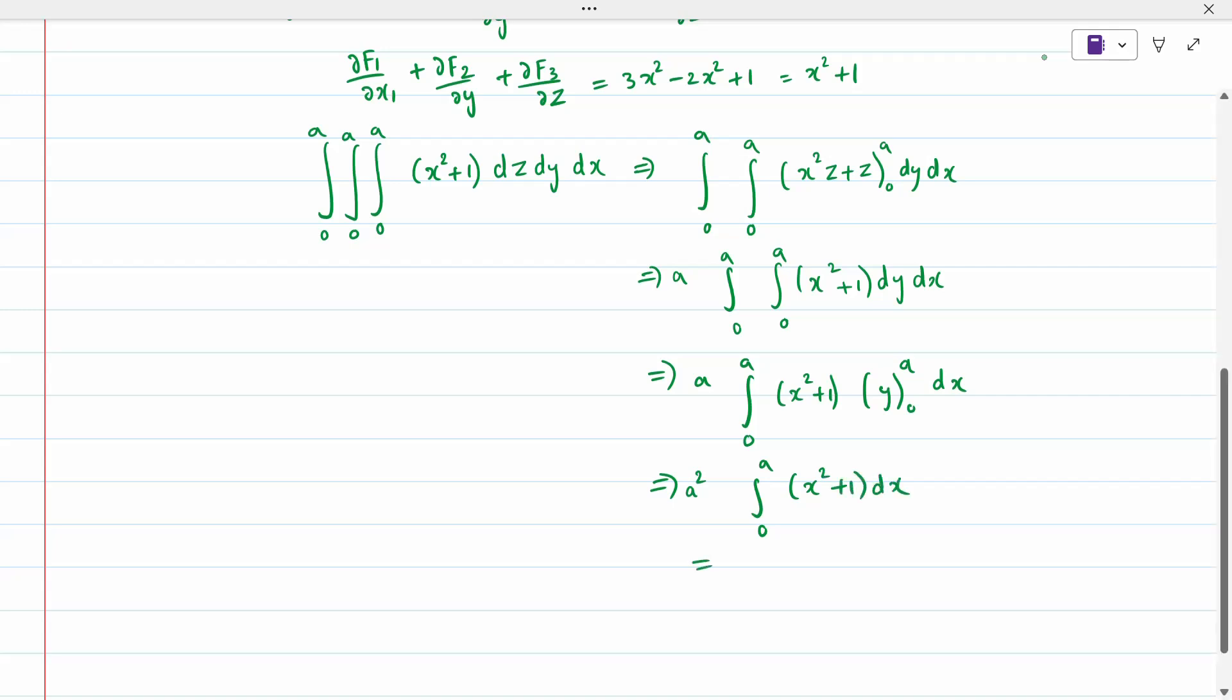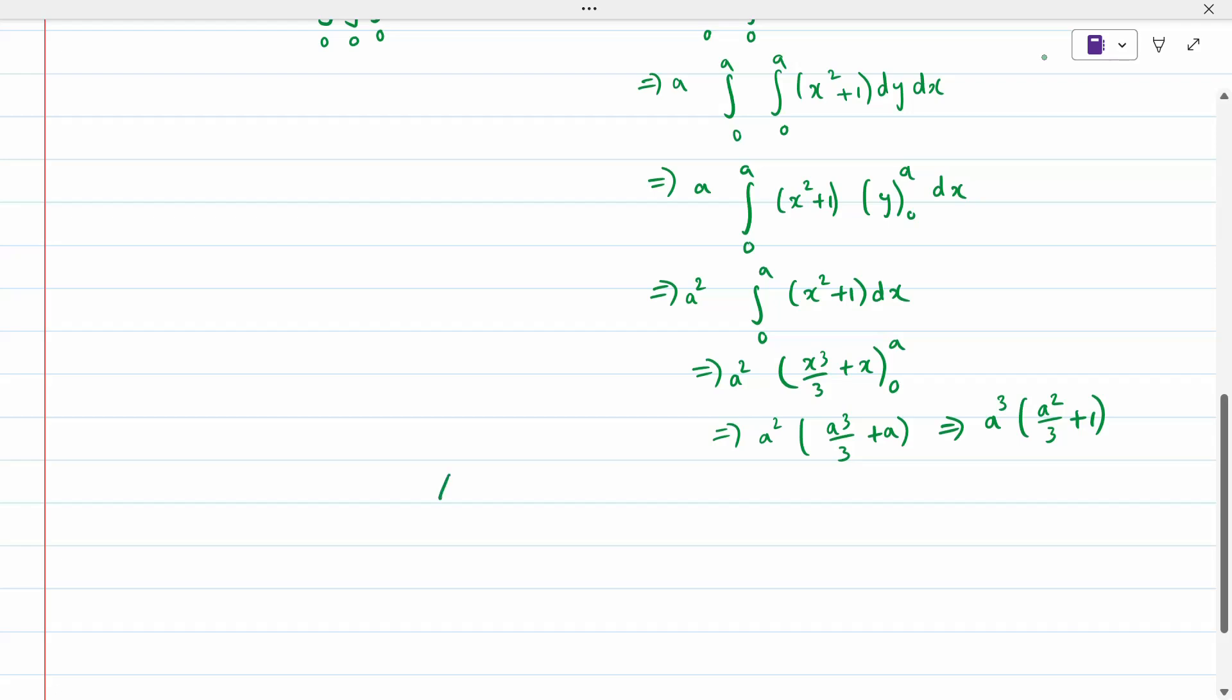Again one more time when I integrate it, (x³/3 + x) from 0 to a. Substitute a, so again when I substitute a, a² times (a³/3 + a). I will take 1a outside. When I take it outside, a⁵ times (a²/3 + 1) is my answer. What is my answer? a⁵(a²/3 + 1) is my answer.